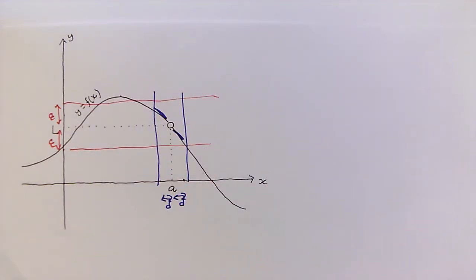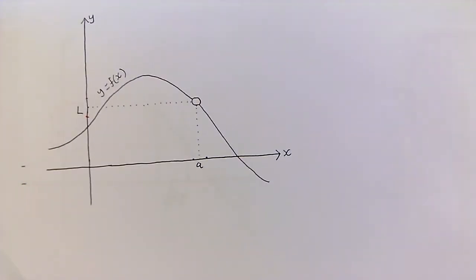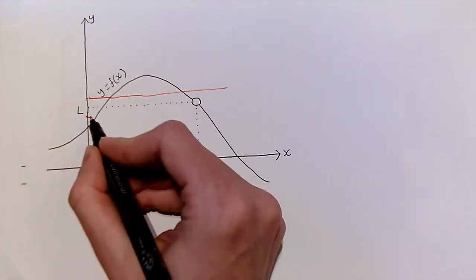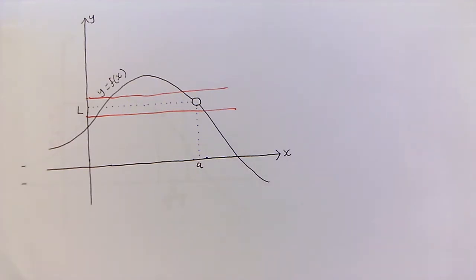Now this diagram just shows one particular choice of epsilon, but the definition says that this should work for any choice of epsilon, however small. So if we'd chosen a smaller epsilon, that would mean we draw a narrower strip, say something like this. We may have had to pick delta to be smaller, right?